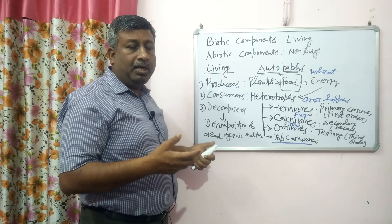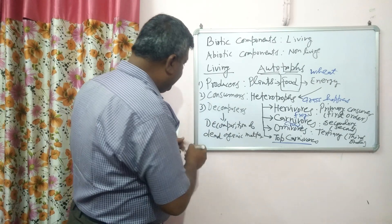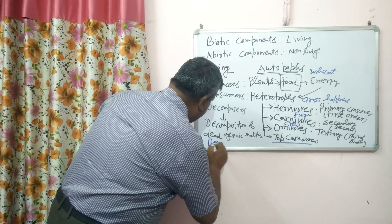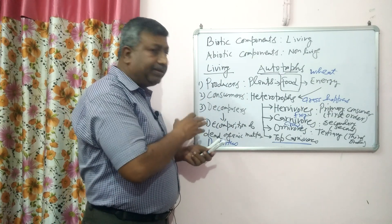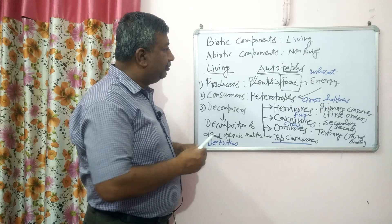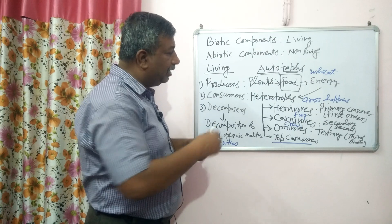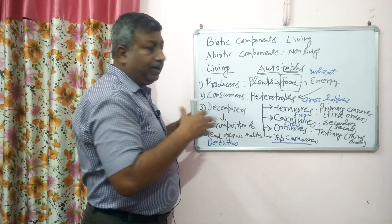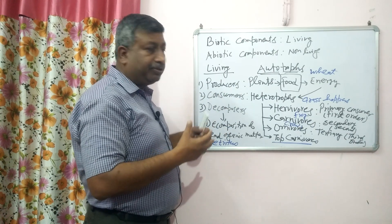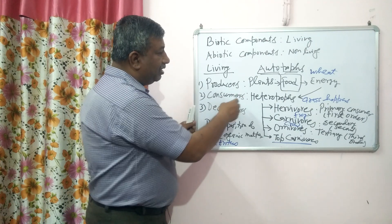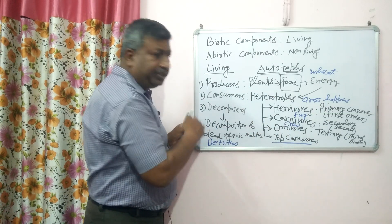So these are the decomposers. Decomposers are also called detritivores — dead organic matter is known as detritus, and organisms that feed on this dead organic matter are known as detritivores. This is the example of the living component of an ecosystem in a wheat field. In a forest it is more complex — there are many primary, secondary, and tertiary consumers. Energy is transferred from producer to primary consumer, to secondary consumer, and then to tertiary consumer.